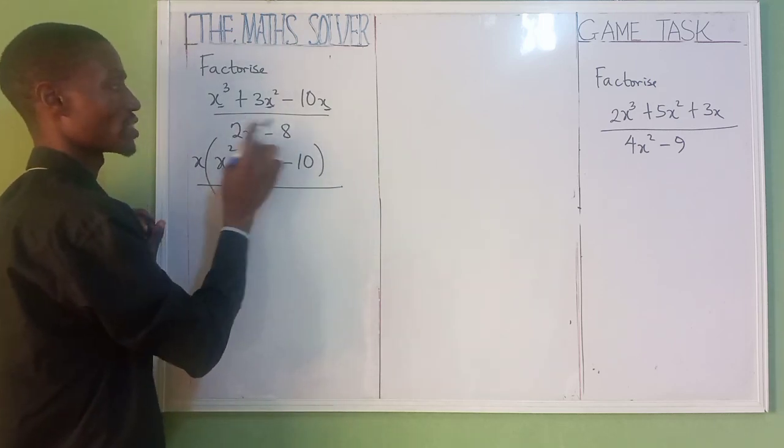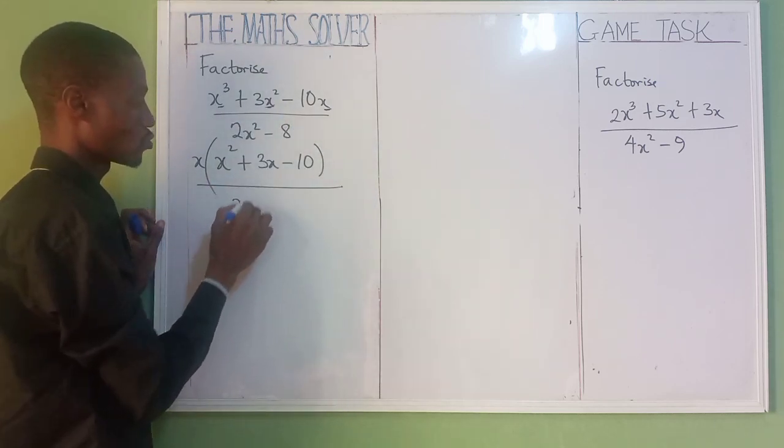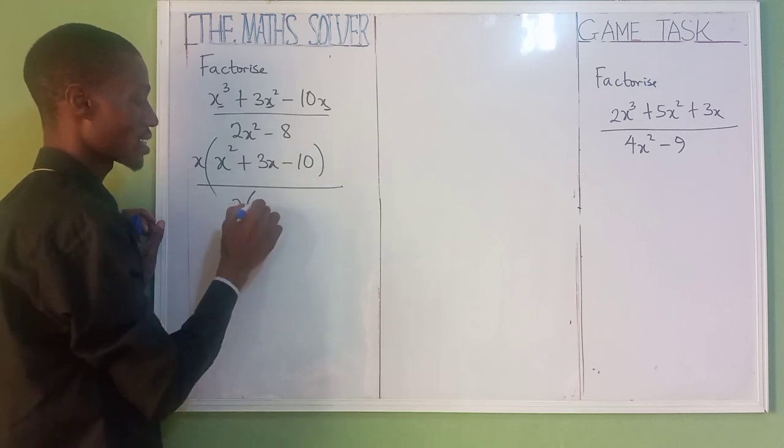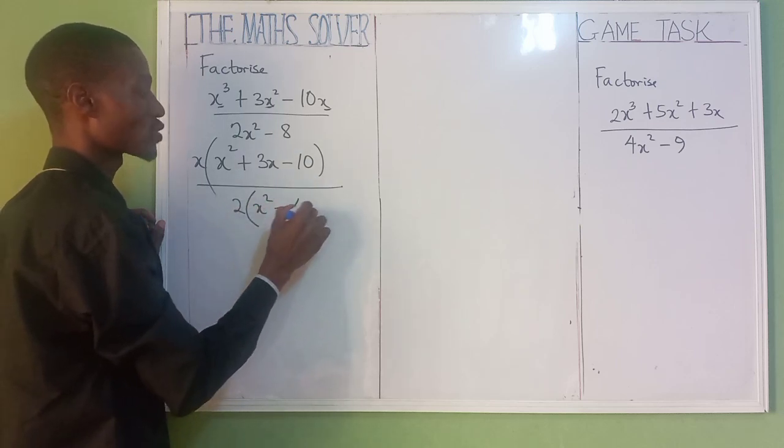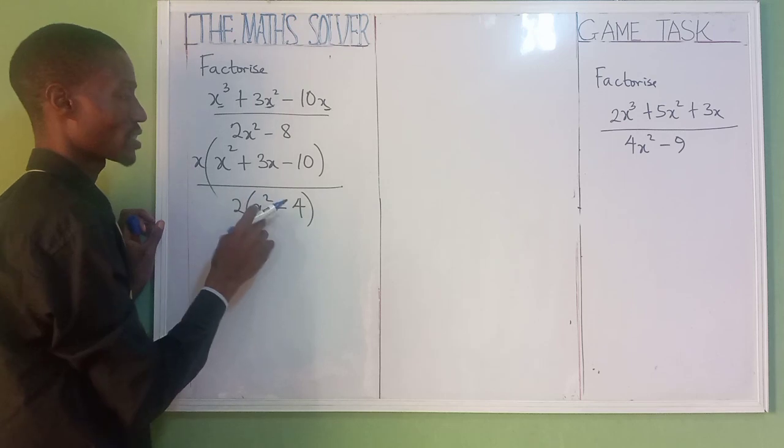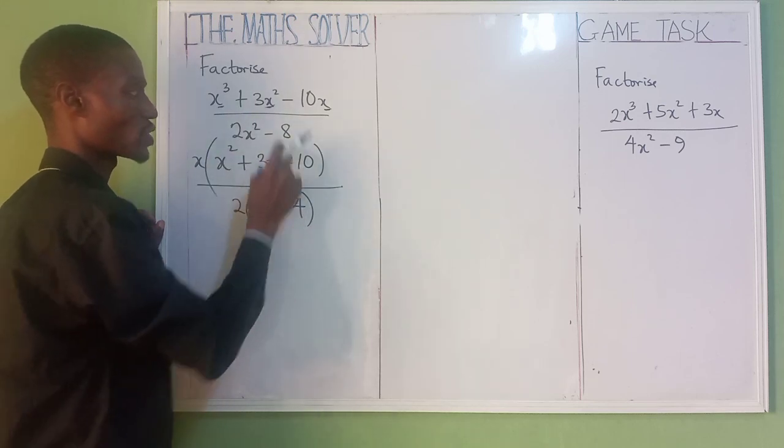Divided by, something is also common here. 2 is common. 2 into bracket, which means x² - 4. Because 2 times x² is 2x², 2 times 4 is 8.